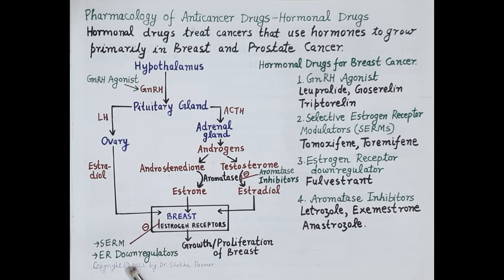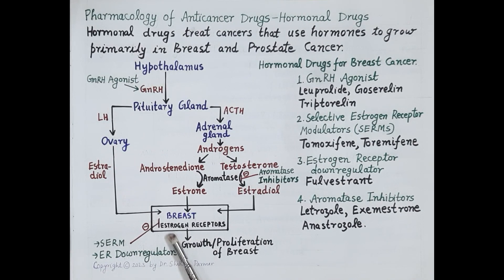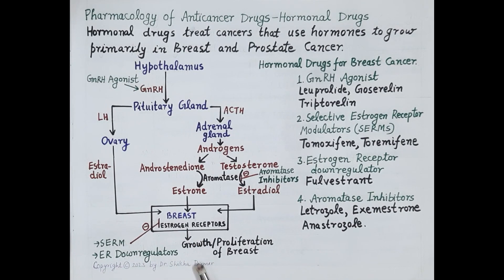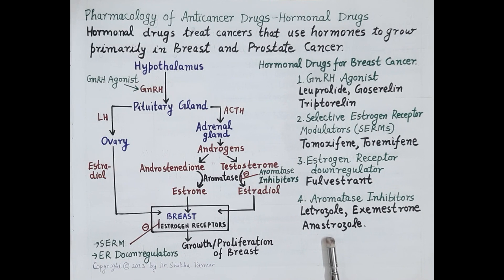The next category are estrogen receptor down-regulators, for example fulvestrant. Fulvestrant is an estrogen receptor antagonist that binds to estrogen receptors. Normally, after binding to a ligand, estrogen receptor monomers dimerize, but fulvestrant prevents this dimerization, causing degradation and down-regulation of estrogen receptors. This stops the effect of estrogen on breast cells and prevents proliferation of breast cancer cells.